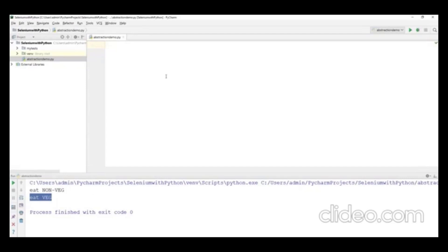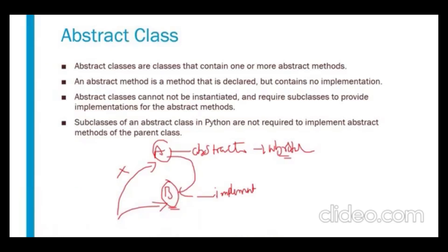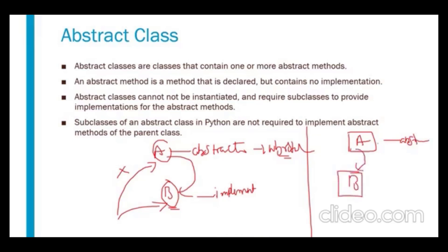Suppose in the abstract class I have multiple abstract methods — say M1 and M2. In the subclass, if I implement only one method, what happens? As per Python, when you create a subclass, you must implement all the abstract methods. Only then can you create an object for the child class.